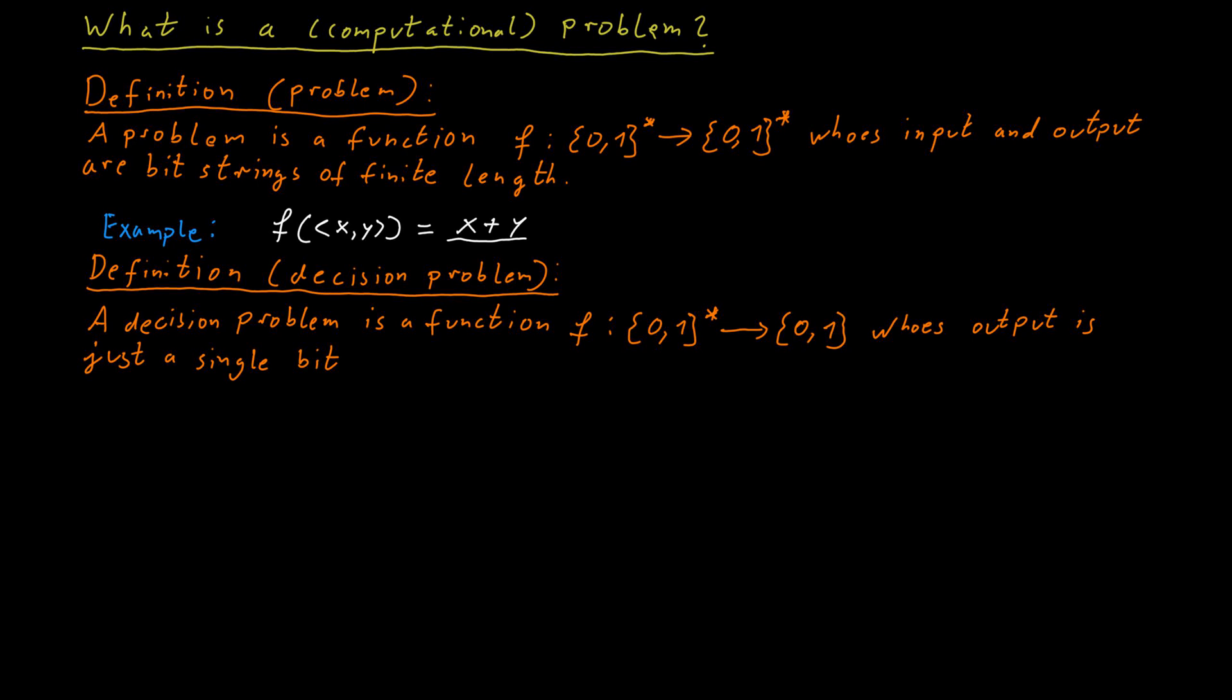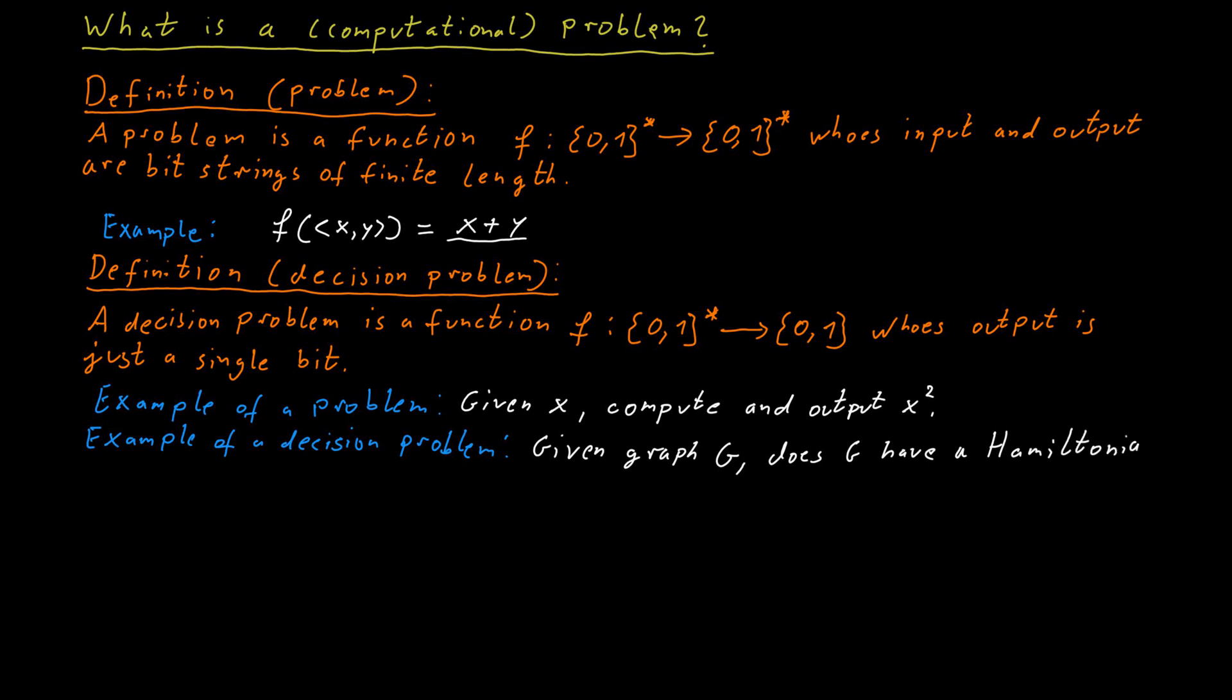An example of a problem would be given an integer x, compute the square of x. An example of a decision problem would be given a graph g, does g have a Hamiltonian cycle? In the first case, we really need a number as an output. In the second case, we are only asking a yes or no question. So the first one is a problem, the second one is a decision problem.